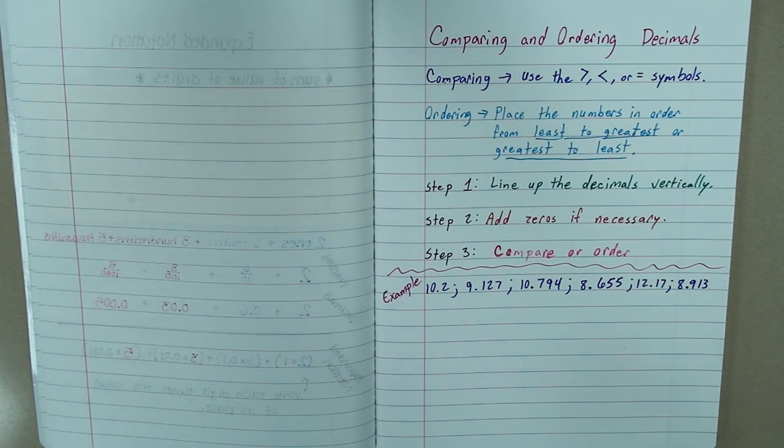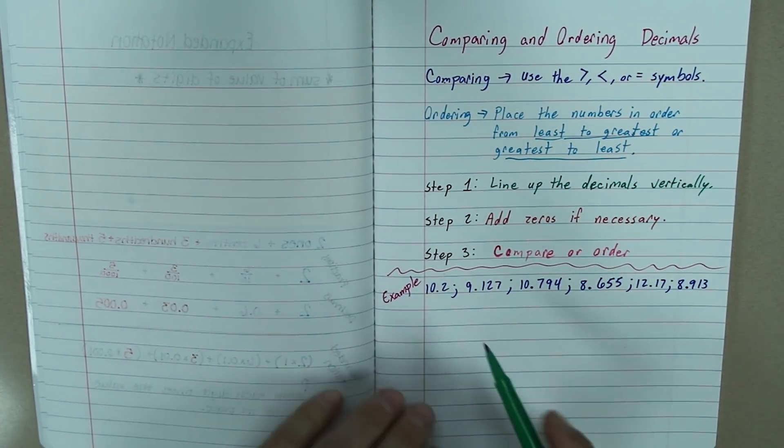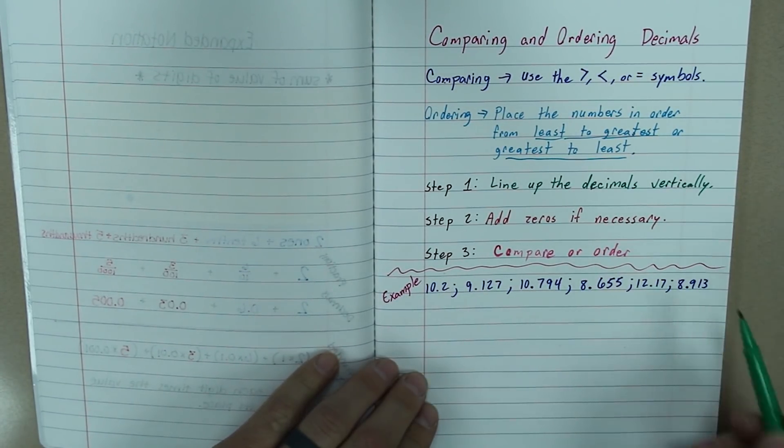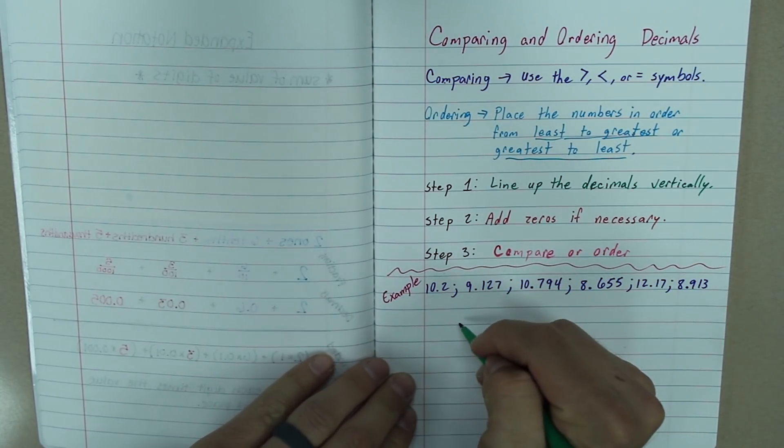So, in our example, the first thing we need to do is line up the decimals. So, I have 1, 2, 3, 4, 5, 6 numbers here. So, I am going to put 6 dots or decimals. 1, 2, 3, 4, 5, 6.